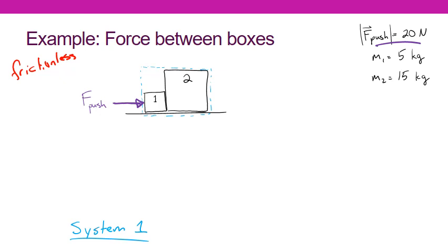If I set something on a slippery surface and then gave it a push, I would expect that it would accelerate in the direction of my push. So I'm going to guess that the acceleration is in this direction, the same direction as my push. What I'd really like to find out is the force that these two boxes exert on each other. However, finding the acceleration of both boxes together will be a step in the right direction.